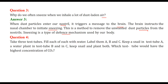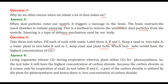Take three test tubes, fill each with water, and label them A, B, and C. Keep a snail in test tube A, a water plant in test tube B, and both a snail and a plant in test tube C. Which test tube would have the highest concentration of CO2? Living organisms release carbon dioxide during respiration, while plants take in carbon dioxide for photosynthesis. So test tube A will have the highest concentration of CO2.